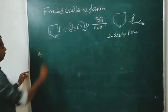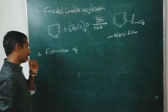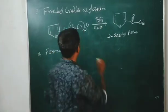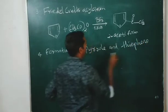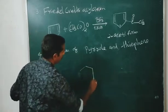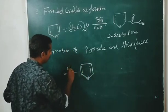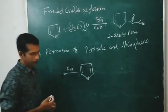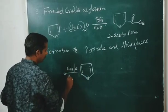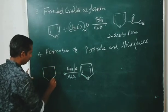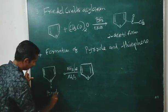Last reaction: formation of pyrrole and thiophene. When furan reacts with ammonia (NH3) at 400 degrees Celsius in the presence of Al2O3, we get pyrrole — the ring now contains NH instead of oxygen.